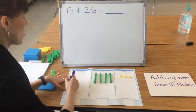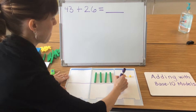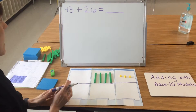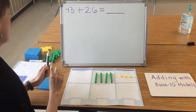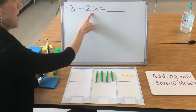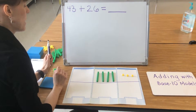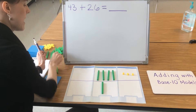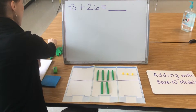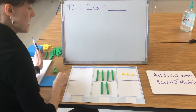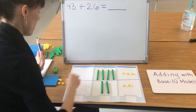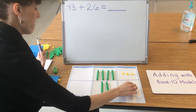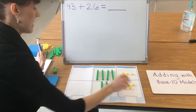I then like to draw a line before modeling my next number just to organize my model. After I model 43, I have to model 26 as well. 26 has two 10s and six 1s: one, two, three, four, five, six.